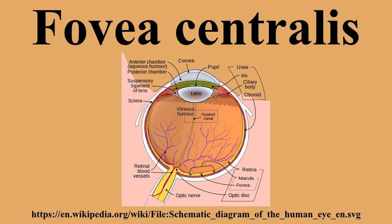This is called the Maxwell spot, after James Clark Maxwell who discovered it. In binocular vision, the two eyes converge to enable bifoveal fixation, which is necessary for achieving high stereo acuity. In contrast, in a condition known as anomalous retinal correspondence, the brain associates the fovea of one eye with an extra-foveal area of the other eye.